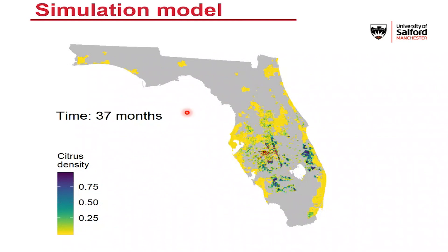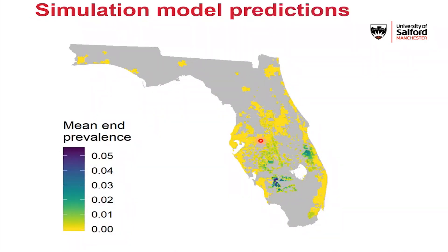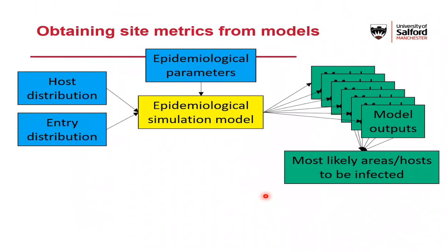This animation shows just a single model realisation, but a major value of stochastic simulation models is that we can run this again and again and get a really good idea of the range of possible spread scenarios. The pathogen entered here in the middle of the state in this run, but it might also enter in other areas — and we can capture that using a stochastic model. We ran this model a thousand times and took the average end prevalence in each one-kilometre cell over all those runs. We can identify a high-risk area down in the south of the state where mean end prevalence was higher than elsewhere — a number we can use to start thinking about deploying surveillance resources.